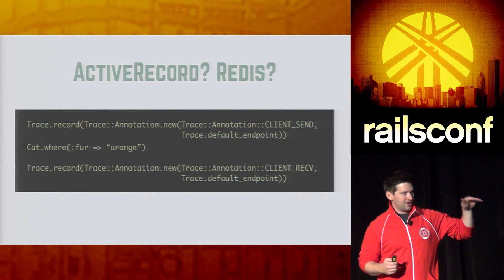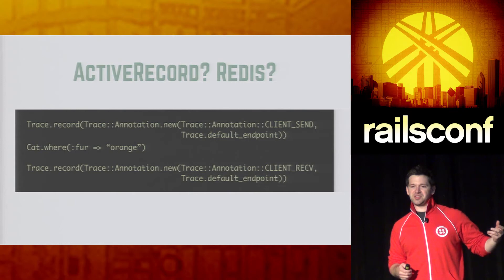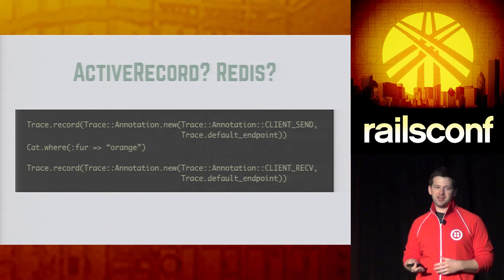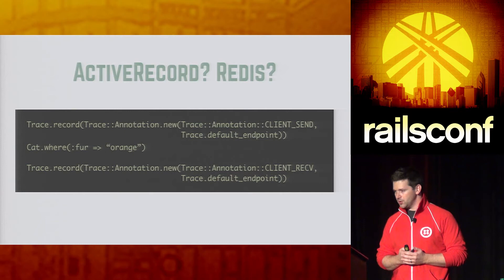You definitely still can do tracing of all of these services — unfortunately you have to wrap them all in tracing calls. For each of your DB requests, as long as it's a synchronous request, this will actually add client tracing for your actual DB call. For asynchronous communication, you do have to be careful that you're actually passing along your trace IDs and your span IDs. But that's something we can talk about offline.